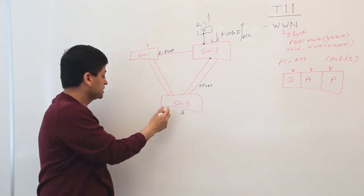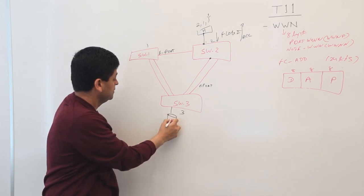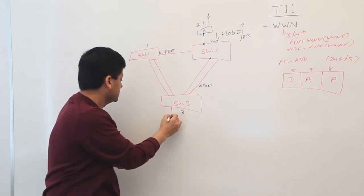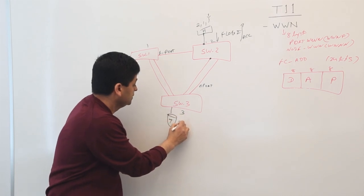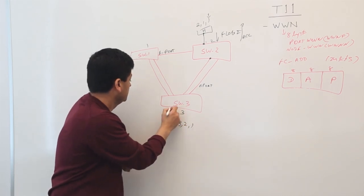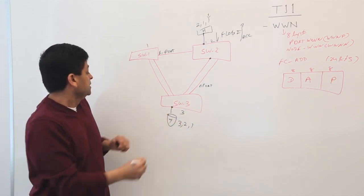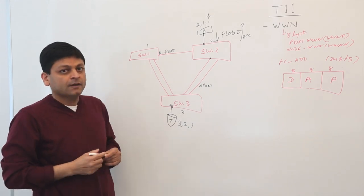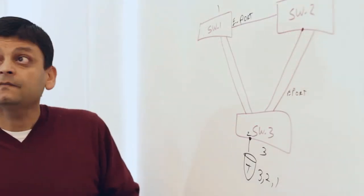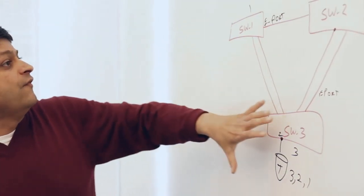If I have another target connected, this target will get an address of 321. Why 3? Because this switch was assigned a domain of 3. It's connected on port 2 and 1 again.